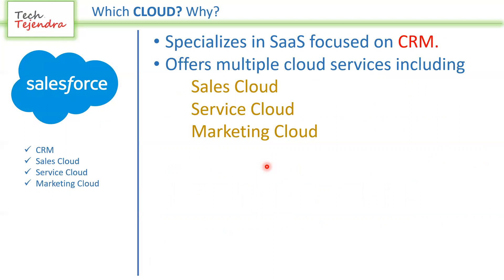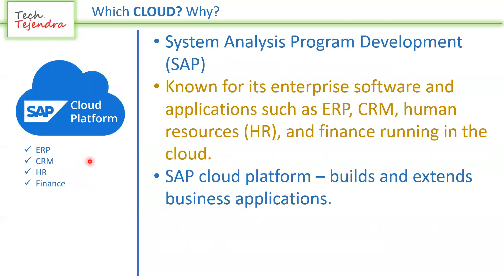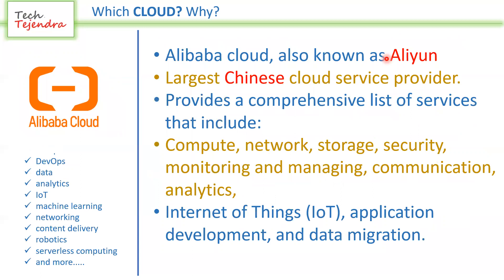Salesforce provides very good SaaS services related to CRM (Customer Relationship Management) — mainly for sales, services, and marketing. If your organization needs these services, Salesforce would be a very good choice. SAP Cloud — which stands for System Analysis Program Development — is very ERP-specific, covering enterprise resource planning, CRM, human resource applications, and financial applications. SAP HANA is SAP's latest product based on the SAP Cloud platform.